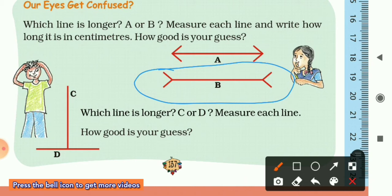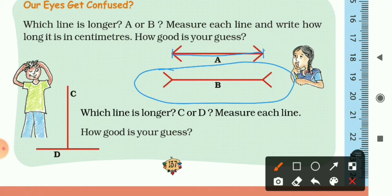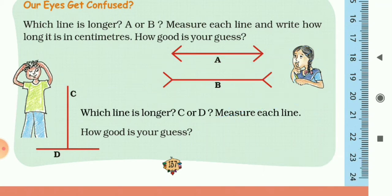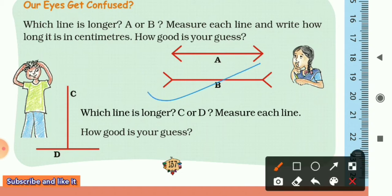The endpoints of line A — we have to measure this length. I measured it and found it was 4.6 centimeters. Similarly, I found the endpoint of line B and measured it — it was also 4.6 centimeters. So line A and line B are both equal and have the same length. B is not longer, even though in first view anyone would say B is longer.